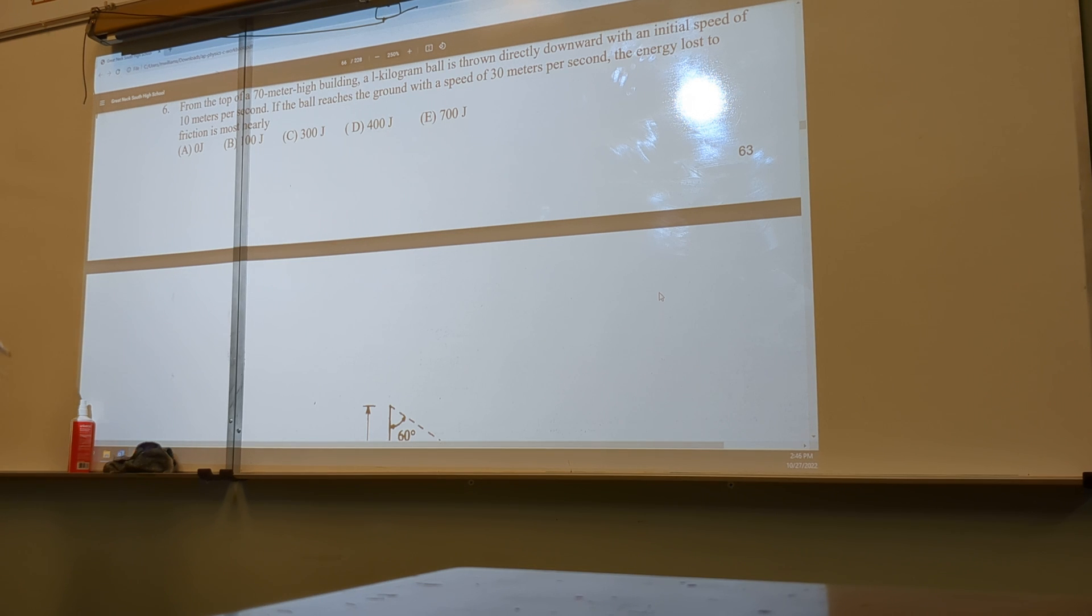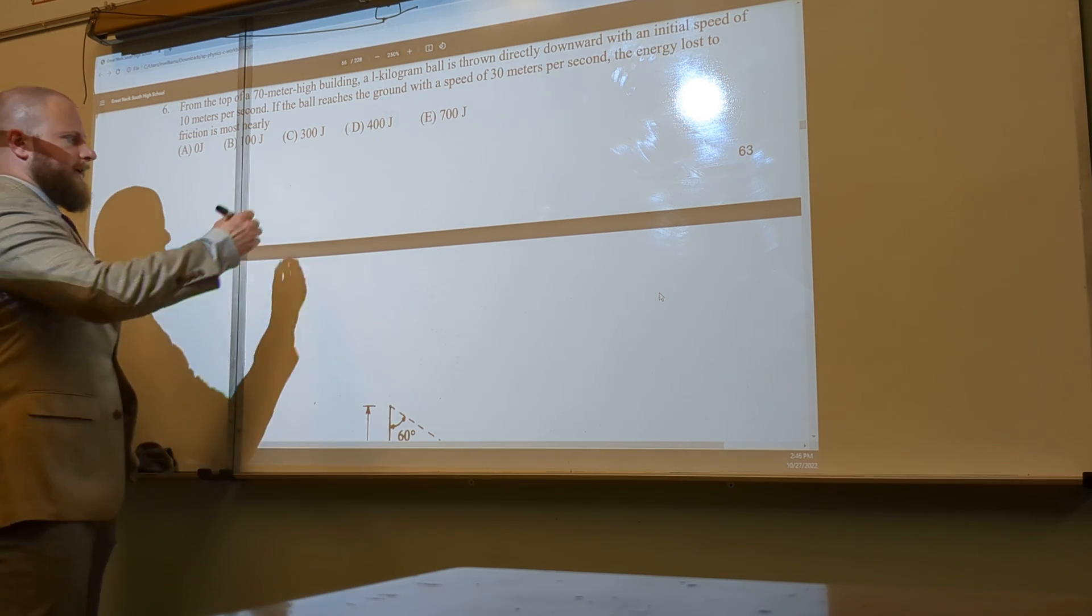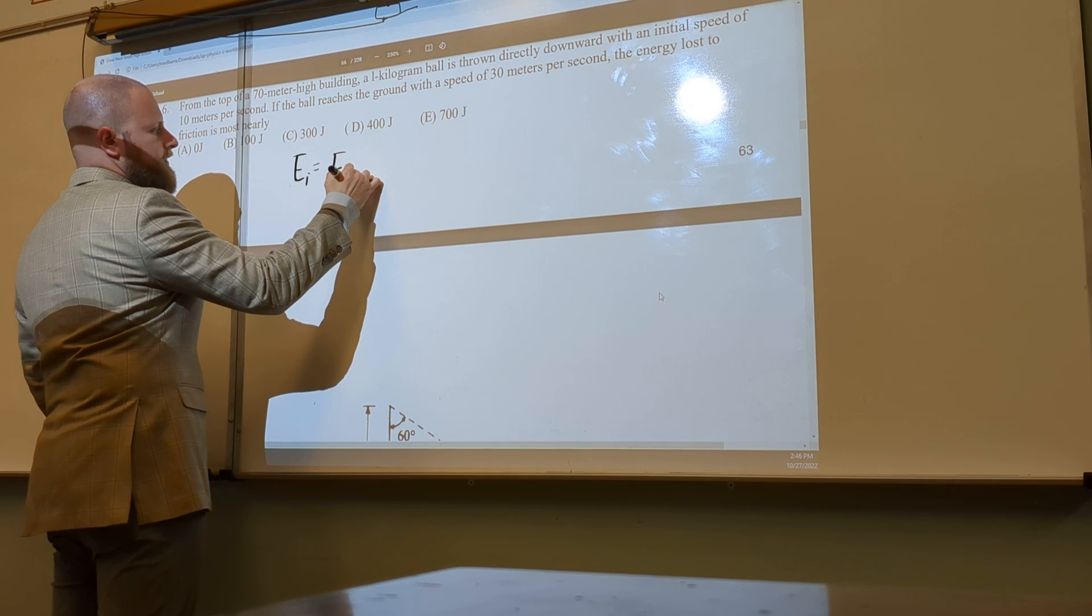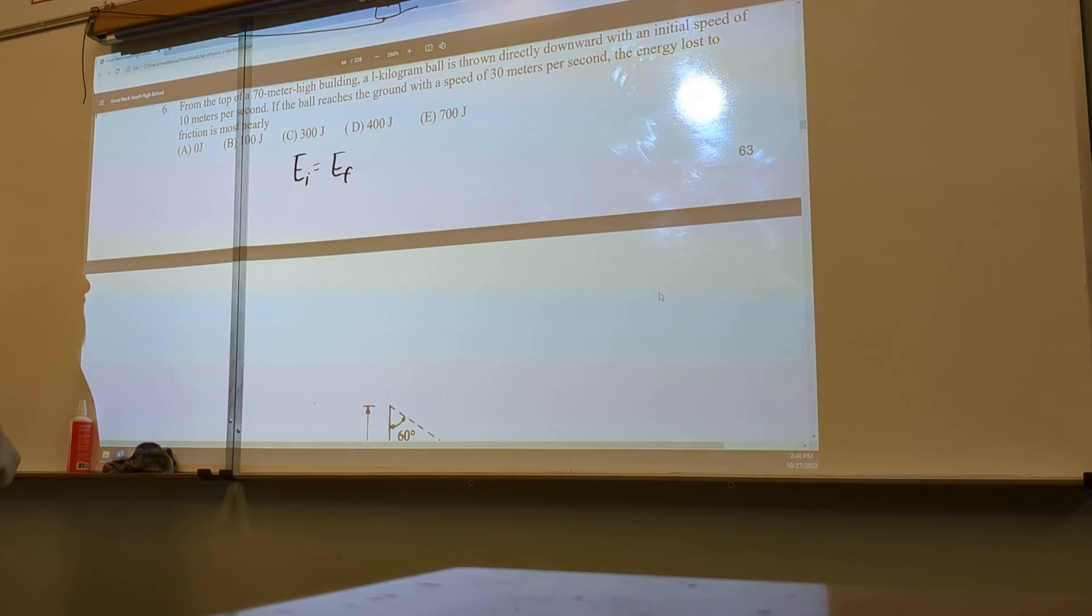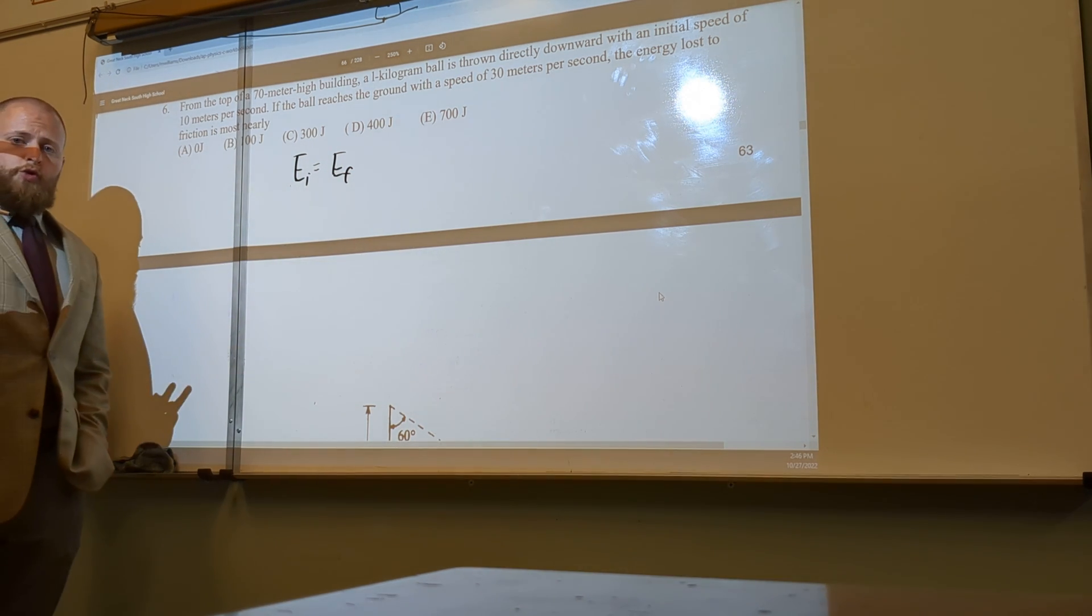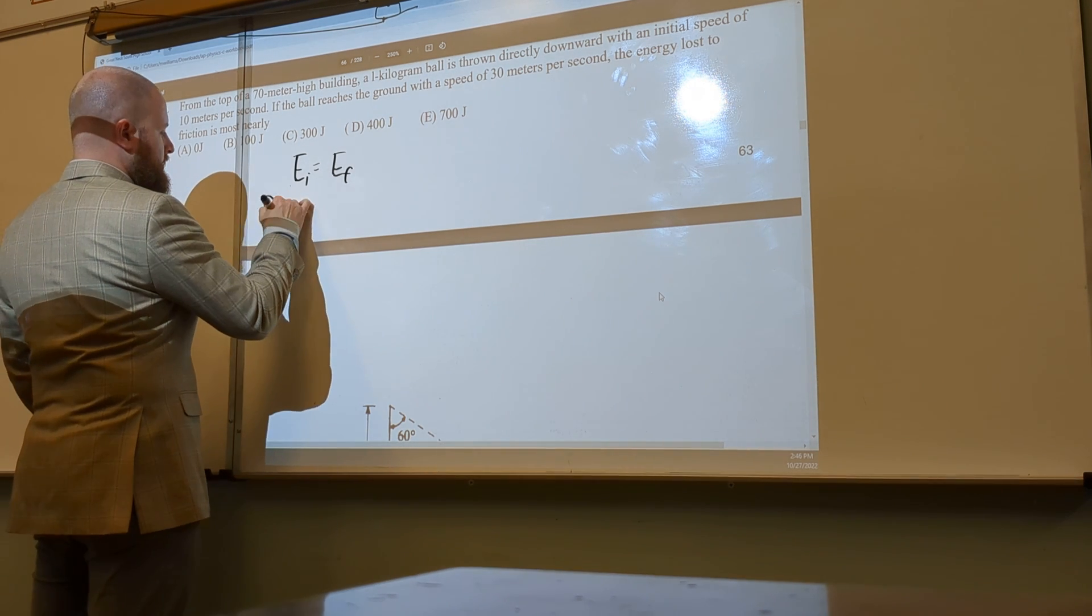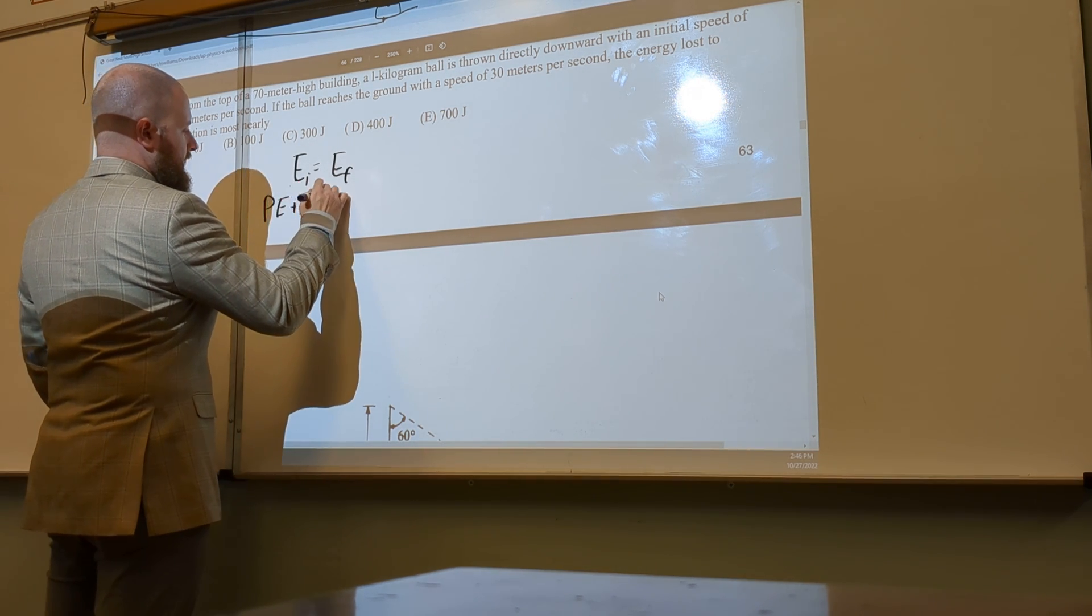For this one, we're going to set it up in a traditional way. We have Ei equals Ef, so our initial is equal to our final energy. Now, what are the two types of energy we have at the beginning? PE plus KE.